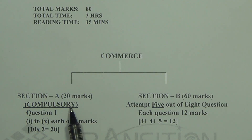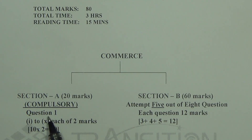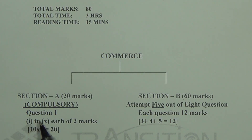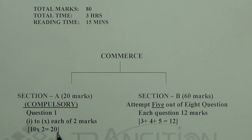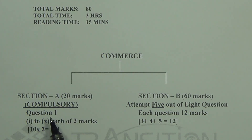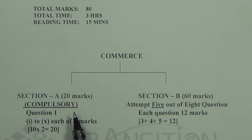Section A comprises of the compulsory portion of your paper. One question, that is question number one, contains 10 sub-questions of each two marks, so 10 into 2 giving you 20 marks for this part. Section A is basically your short answer questions, so please write answers to the point and do not try to elaborate things.